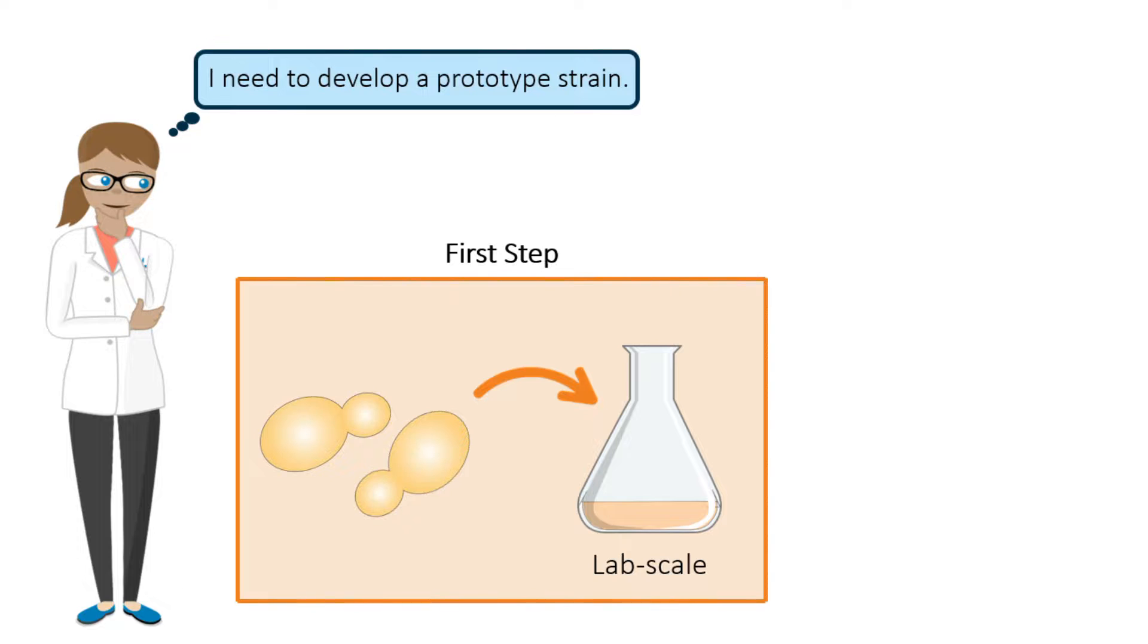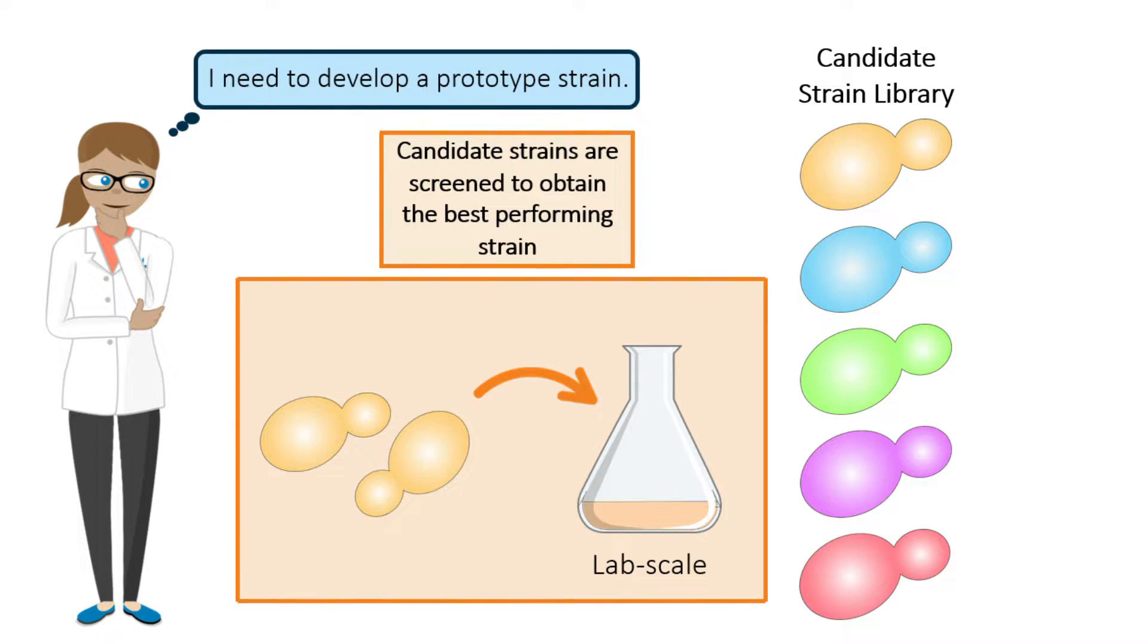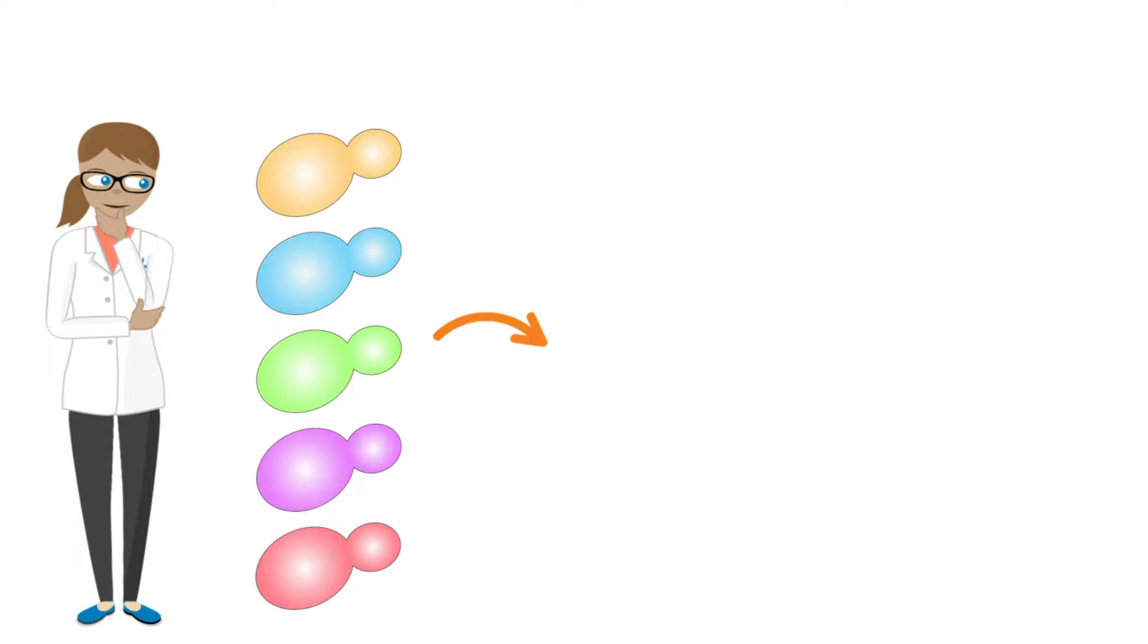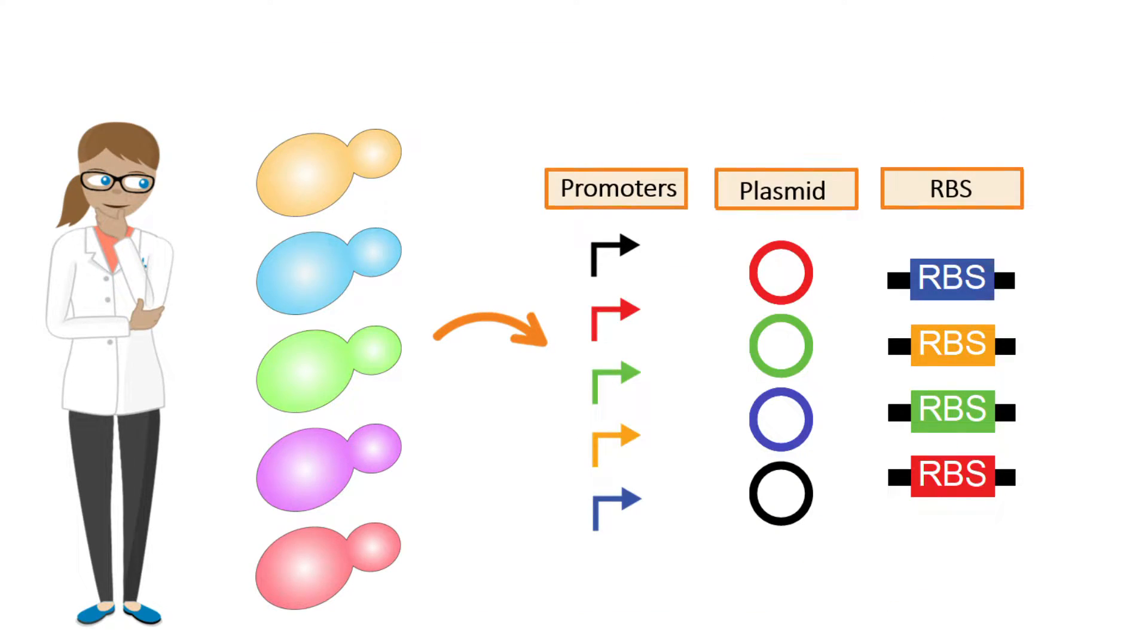Alex will first focus on developing a prototype strain. This involves construction of a library of candidate strains which is then screened to obtain the best performing candidates. Strain engineering involves many genetic parameters and requires the selection of genetic parts to control the expression of each enzyme.